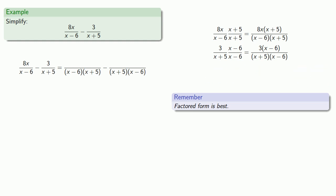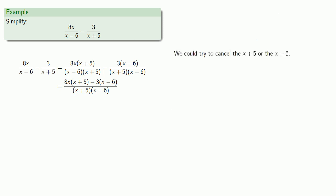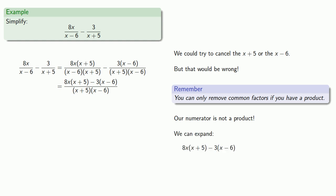Now our denominators are the same, so we can subtract the numerators and keep the same denominator. Let's see if we can simplify this. We could try to cancel the (x plus 5) or the (x minus 6), which appear in both numerator and denominator — but we would be wrong. The important thing to remember is that you can only remove common factors if you have a product, and the numerator is not a product, it's a difference. So if we have any hope of simplifying, we'll have to expand our terms out and simplify.